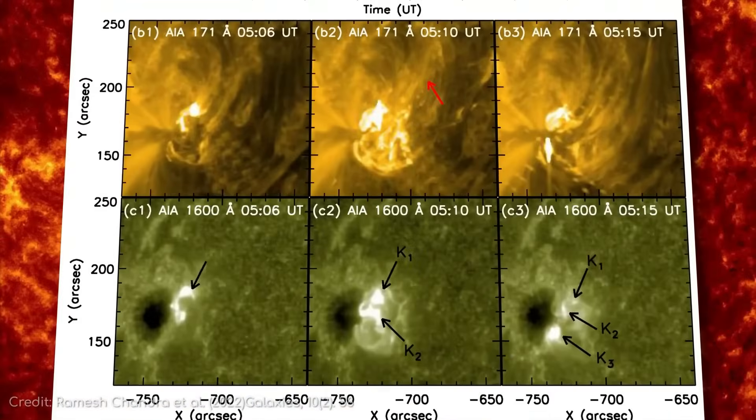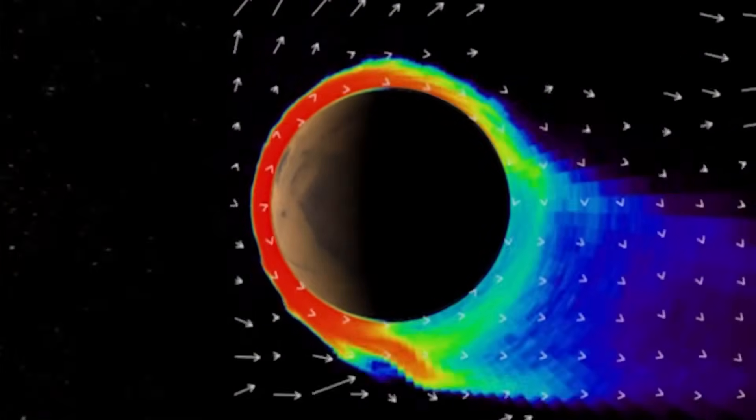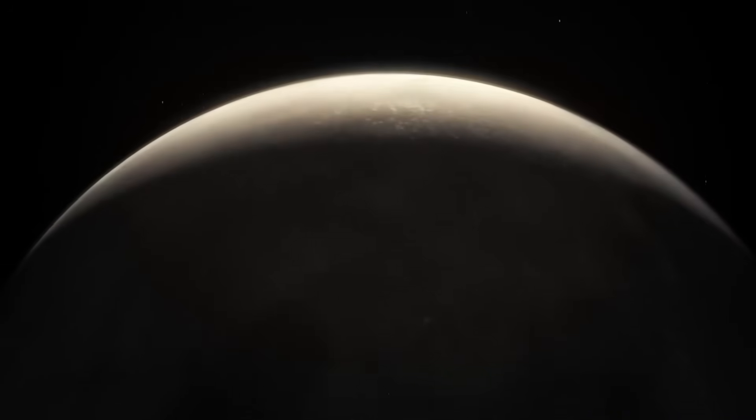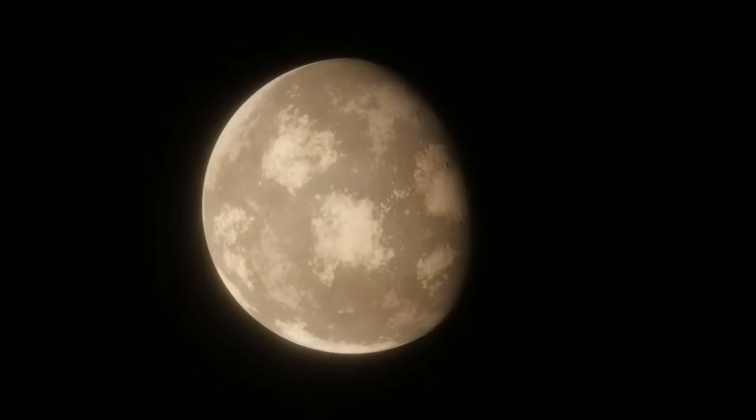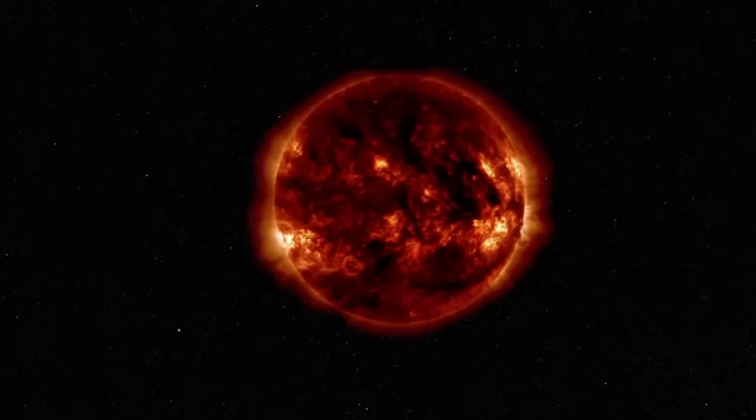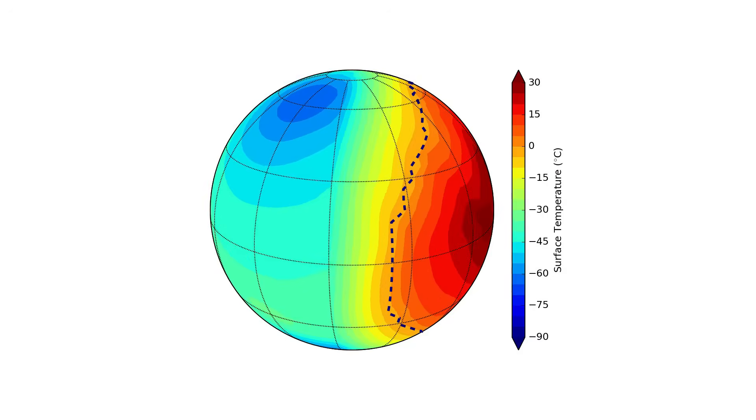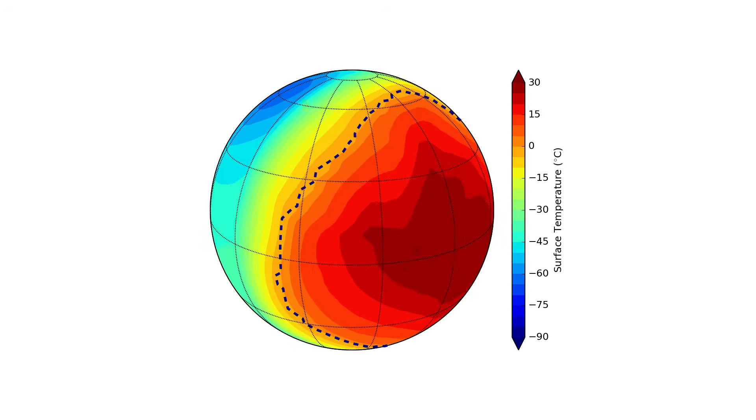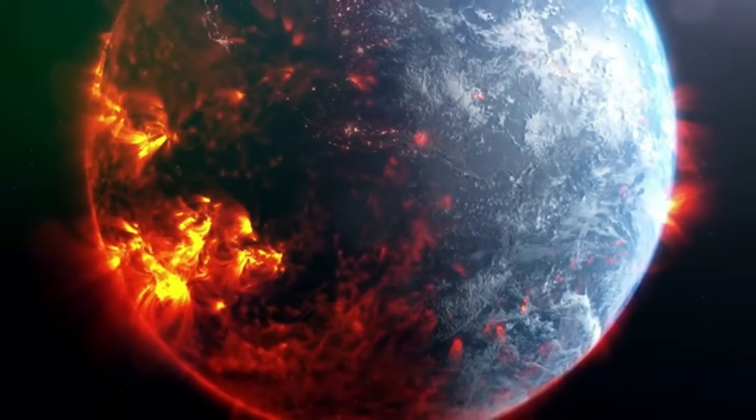Infrared measurements revealed that this structure has an extreme temperature contrast compared to the surrounding landscape. While most planetary surfaces cool down predictably after exposure to their star's radiation, this anomaly retains and releases heat in a way that does not align with known geological processes. The temperature fluctuations suggest that the material in this region has properties that are fundamentally different from the rest of the planet's crust.